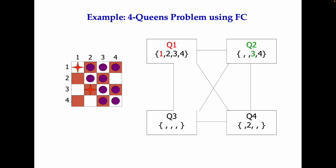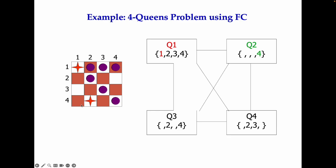We backtrack and reassign: now we try queen 2 at row 4. The impact on queen 3 is that the row corresponding to queen 2's position and one additional diagonal row are removed. For queen 4, the same row and row 2 are removed due to the diagonal attack from queen 2. We update the domain values for Q3 and Q4 accordingly.